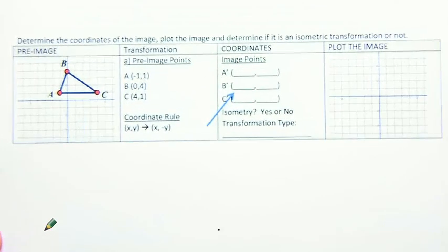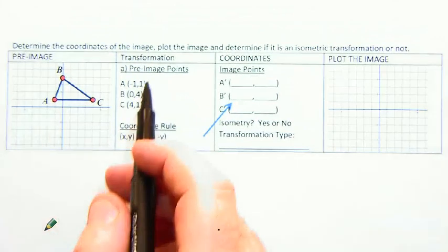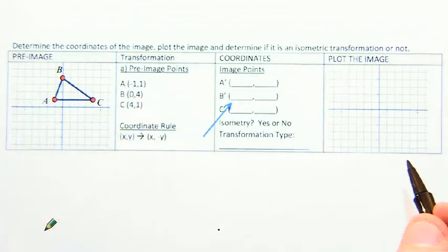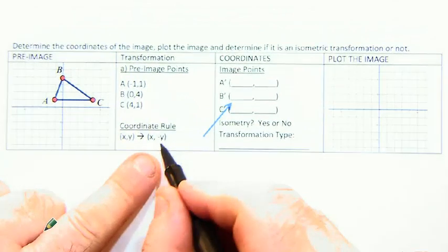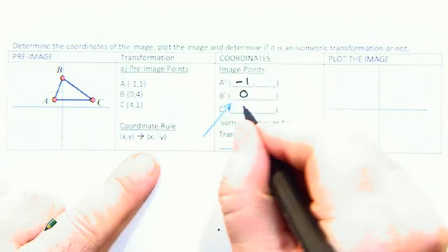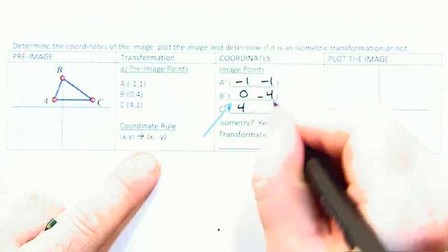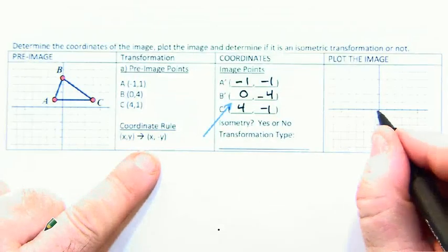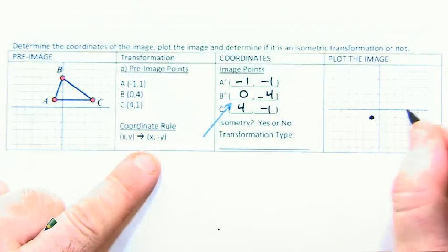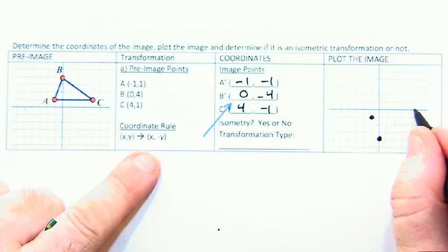You're given a triangle, its points, and a coordinate rule, and you're asked to apply the coordinate rule. So this says negate all of the y values. So I'm going to leave x alone, and I'm going to negate all of those other values. And then I'm going to plot this at negative 1, 1, at 0 and negative 4, at 4 and 1, 1, 2, 3, 4, and 1.